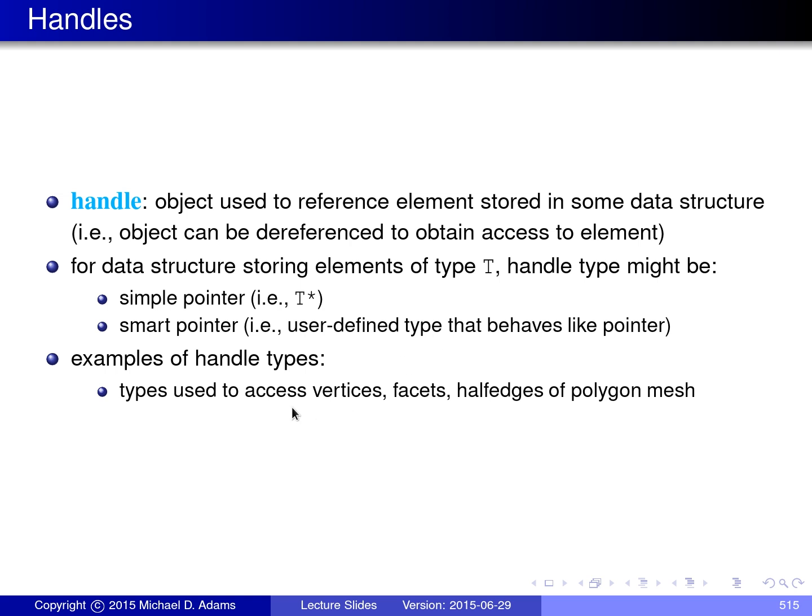Some examples of handle types: for example, when dealing with polygon meshes in the CGAL library, vertices, facets, and half edges that are parts of the polygon mesh are referred to by handles or handle types.